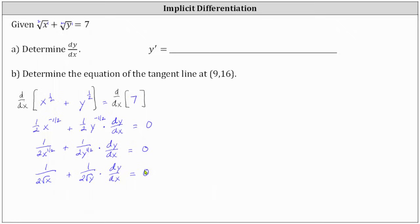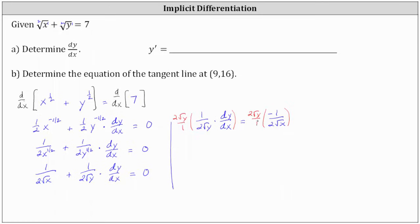Now let's solve the equation for dy/dx. We begin by subtracting 1 divided by 2 square root x from both sides, which gives us 1 divided by 2 square root y times dy/dx equals negative 1 divided by 2 square root x. To solve for dy/dx, we multiply both sides by the reciprocal of 1 divided by 2 square root y, which is 2 square root y. Simplifying, 2 square root y divided by itself simplifies to 1, giving us dy/dx equals negative square root y divided by square root x.